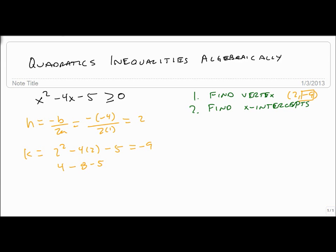Our x-intercepts, we just take our quadratic, set it equal to 0. In this case it factors, so x is 5 and x is minus 1.